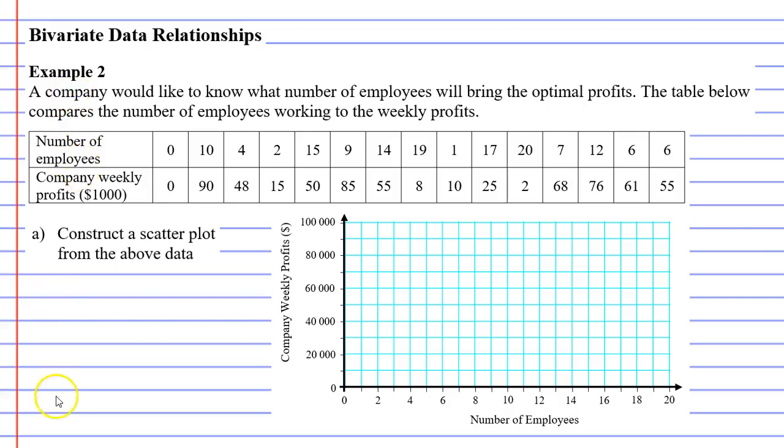In this video we're going to complete example two. A company would like to know what number of employees will bring the optimal profits. The table below compares the number of employees working to the weekly profits.